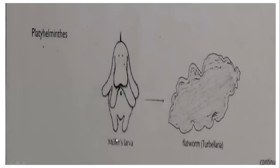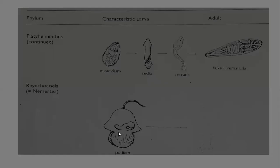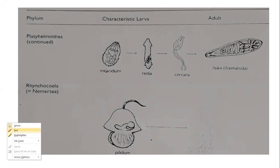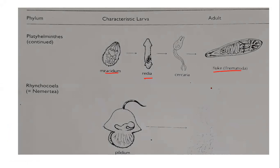In case of platyhelminthes, the larval stage is Muller's larva. There is also the miracidium larva in platyhelminthes. The miracidium larva goes through redia stage and its adult is the trematoda or liver fluke.